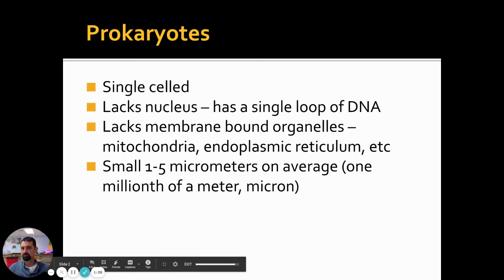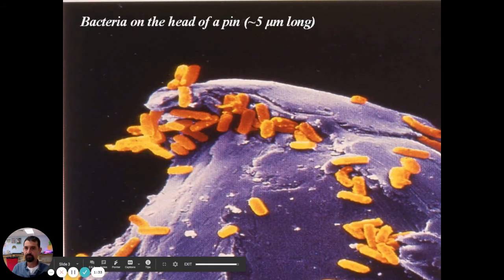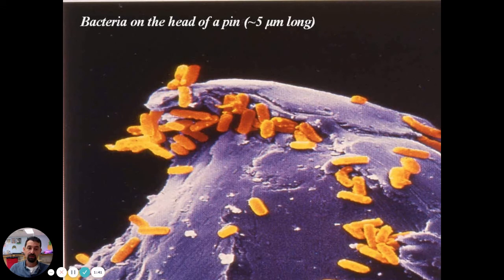Bacteria are one to five micrometers or microns on average — that's a millionth of a meter, so they're very, very small. Your cells are generally bigger than bacterial cells. Here, for example, at about five microns, these are bacteria on the tip of a pen. Each one of those orange-colored things is a single bacterial organism, and that rough surface is metal with bacteria on it.